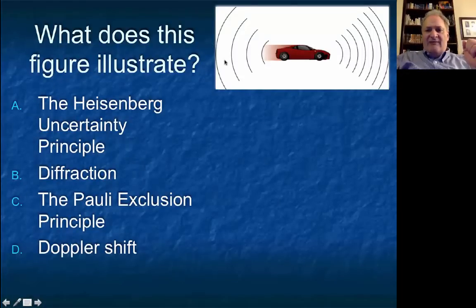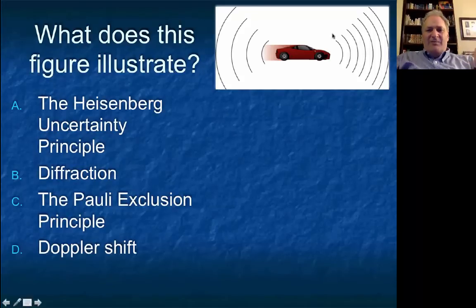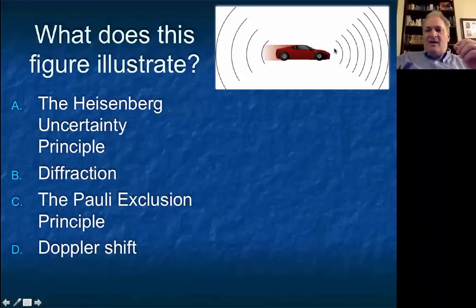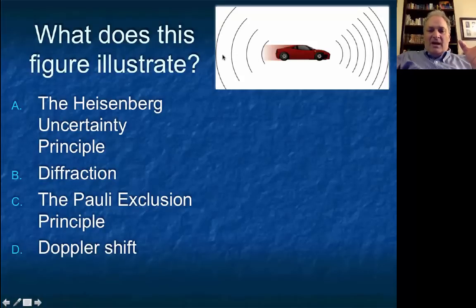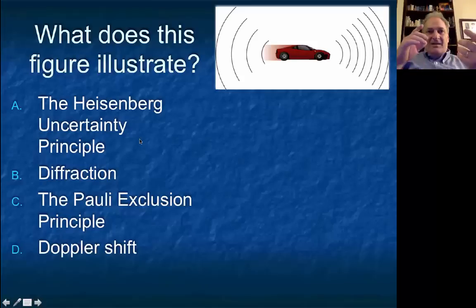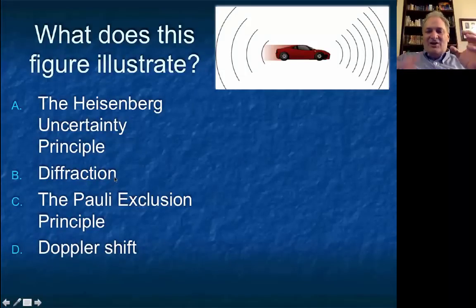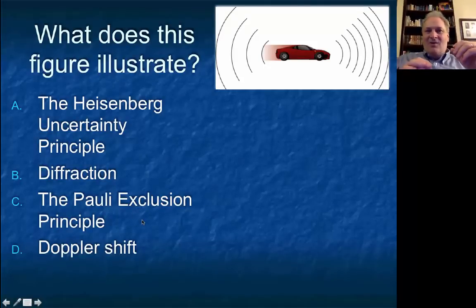What does the figure of a moving car with compressed waves on one side and stretched waves on the other illustrate? This is the Doppler effect — Doppler shift. When a car honks, it produces waves of a certain wavelength, but they get compressed in the direction the car is moving and stretched out behind it. It's not the uncertainty principle, not diffraction, and not the Pauli exclusion principle. It's Doppler shift.